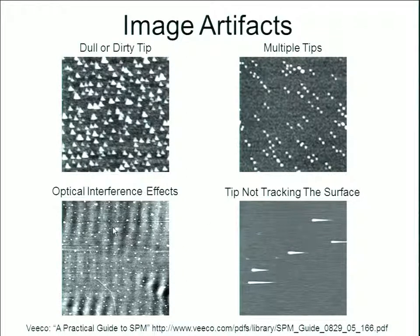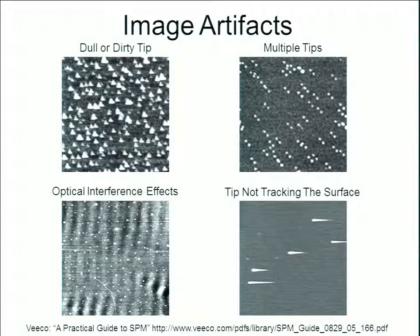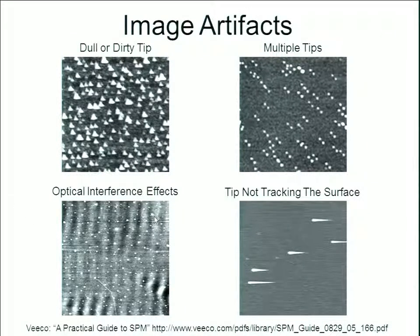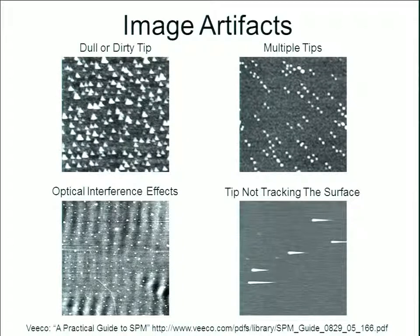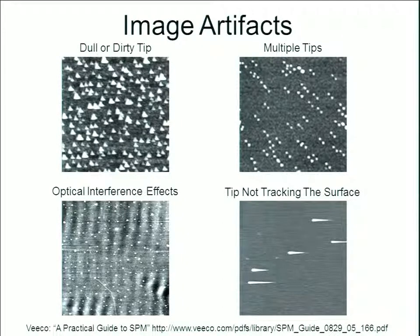Another common artifact is optical interference, which occurs if part of your laser beam spills over the cantilever and is reflected back to the detector. What you end up picking up is the optical interference pattern from the laser light itself, appearing as a series of waves throughout your image. Another artifact is the tip not tracking, also called parachuting, which occurs if your feedback loop is not set up appropriately. It's important to learn about the different types of artifacts that may occur, and to learn how to avoid or correct them.